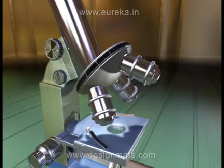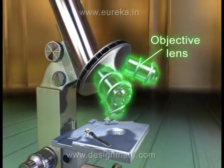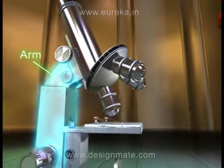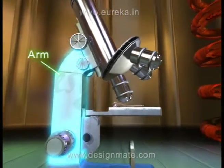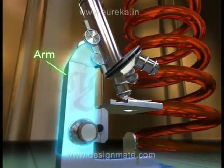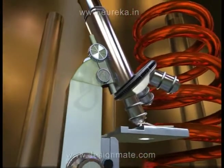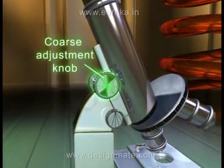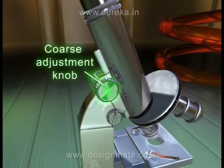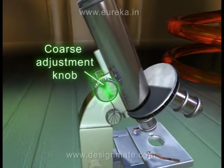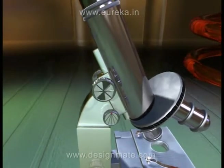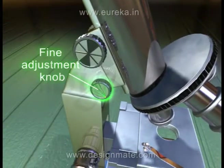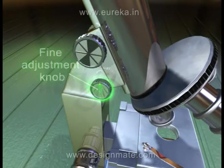Then we have the objective lenses which are attached to the nose piece. The arm is the part of the microscope with which you can hold the microscope. Then we have the coarse adjustment knob, which is a large round knob on the side of the microscope and is used for focusing the specimen. Adjacently, we have the fine adjustment knob, which is a small round knob on the side.